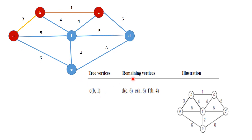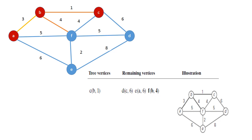The remaining vertices are D, E, and F. D's nearest tree vertex is C with minimum edge distance 6. E's near vertex is A with minimum edge distance 6. F can connect to A, B, and C, but choosing the minimum — I prefer B in alphabetical order — so near vertex is B and minimum edge distance is 4. Among the remaining vertices, F gives the minimum, so F-to-B is highlighted, and F is added to the tree vertices.